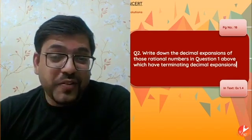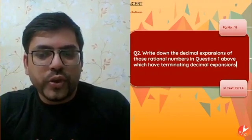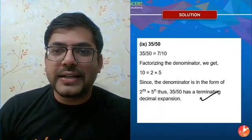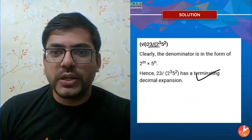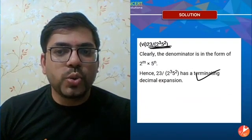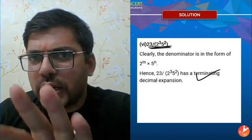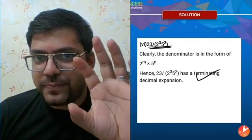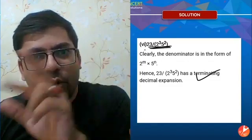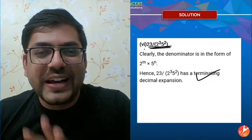Moving on to Question 2: write down the decimal expansion of those rational numbers from Question 1 which have terminating decimal expansions. We'll focus on the ones from parts 6 to 10 that are terminating. The sixth question gives a terminating result — 23 upon 2³ · 5² — so let's do the decimal expansion.